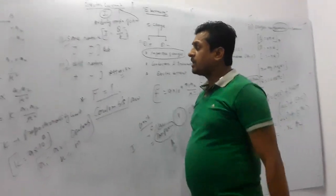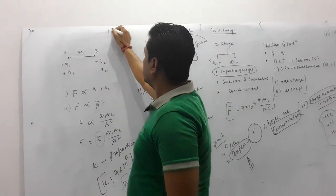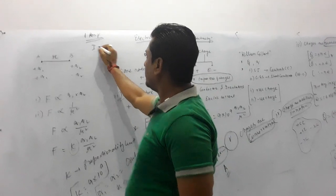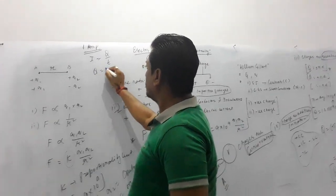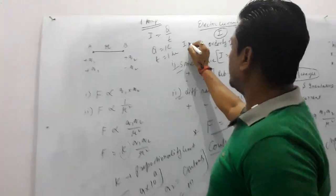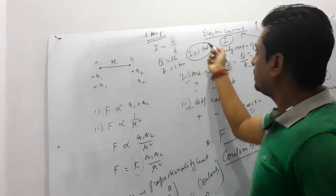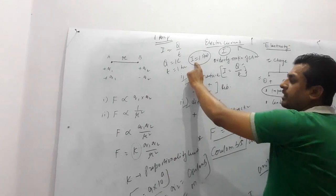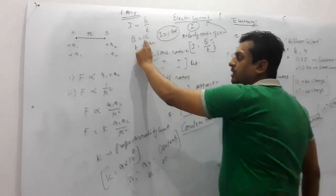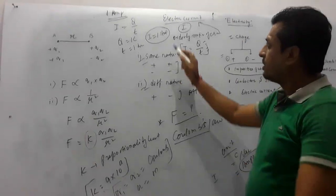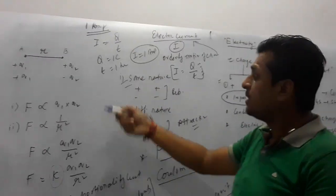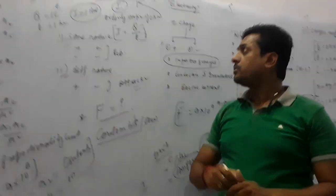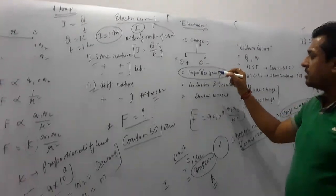Sometimes a question asks: what is one ampere? From the formula I = Q/t, if Q is one coulomb and time is one second, then I equals one ampere. So one ampere is the amount of current produced due to the flow of one coulomb of charge per unit second.